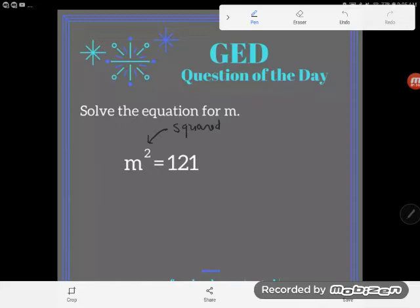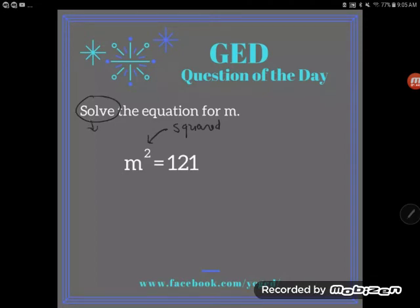M squared is equal to 121. Please don't say M two, that's a different thing. Okay, that's M squared or M to the second power. So I know I've been told to solve the equation, and again to solve an equation means to isolate the variable, get the letter alone.